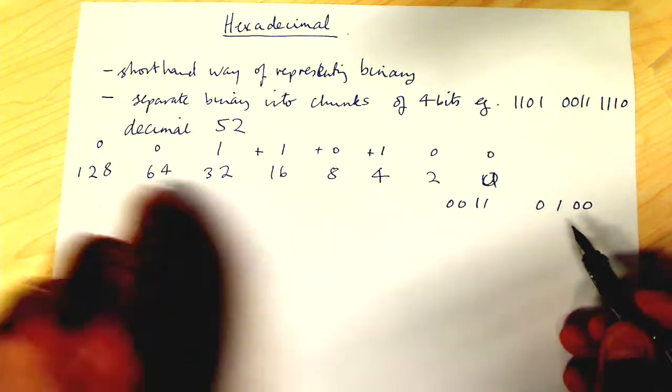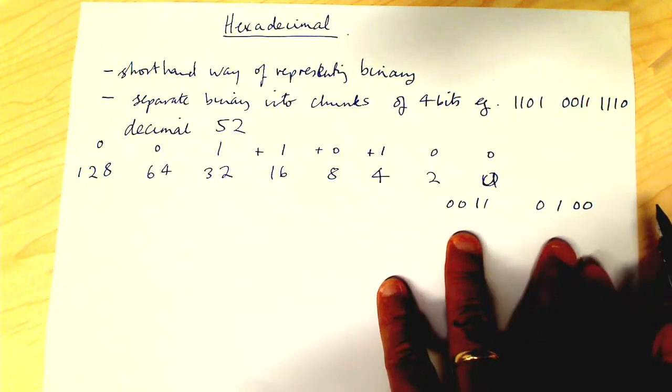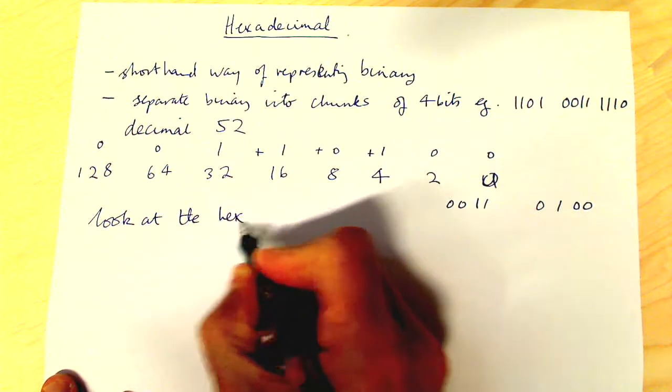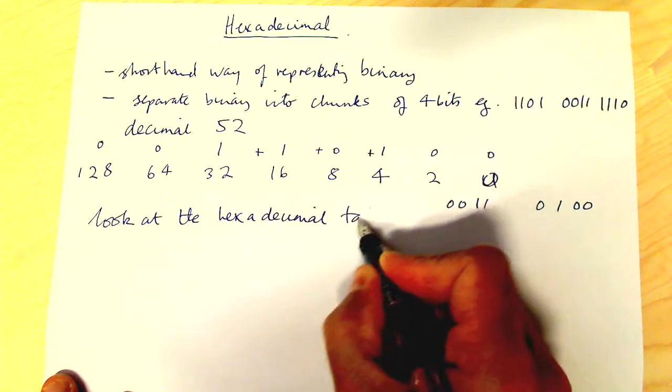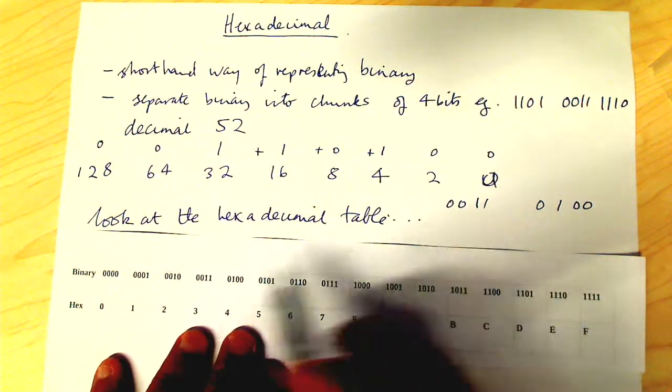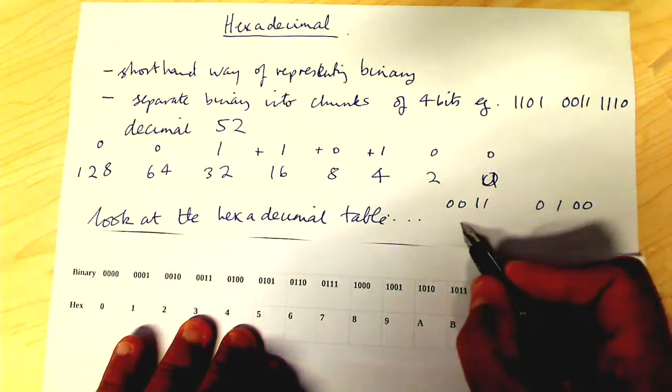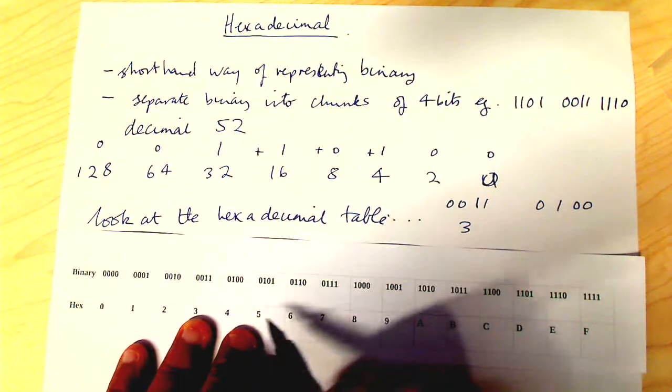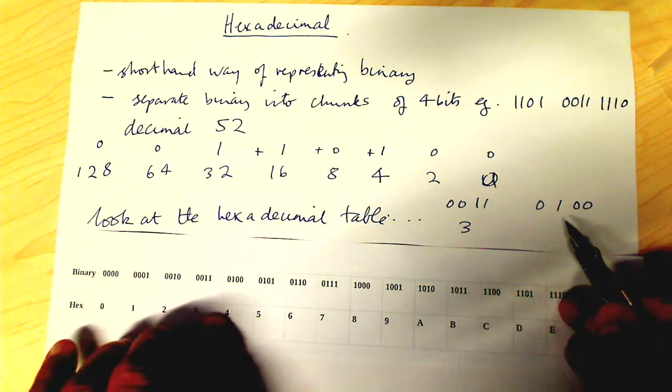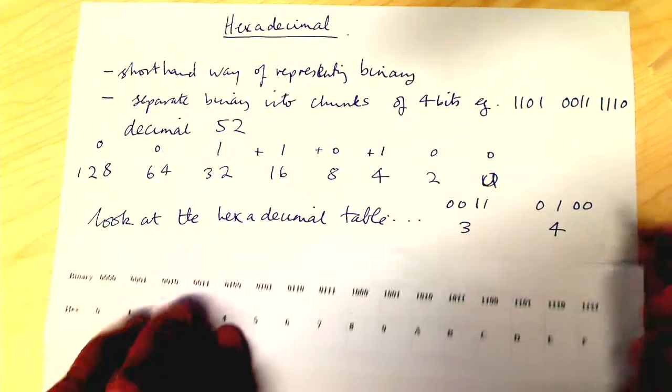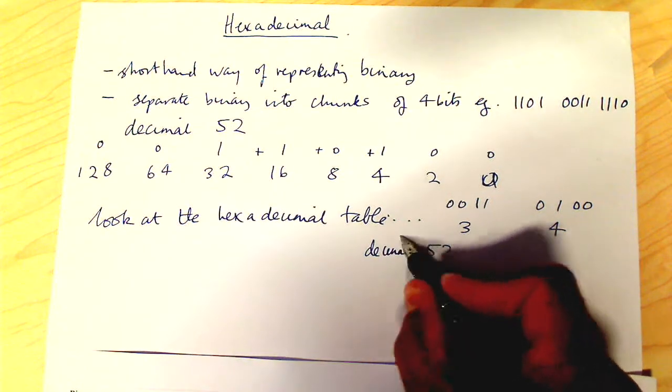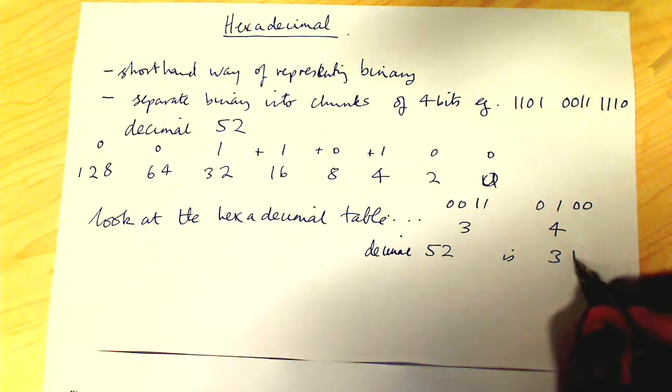So we split our binary number up into chunks of 4 bits. Let's look at our hexadecimal table. So we're looking for 0011. So 0011 is 3 and 0100 is 4. So in hexadecimal, the decimal 52 is 34 in hexadecimal.